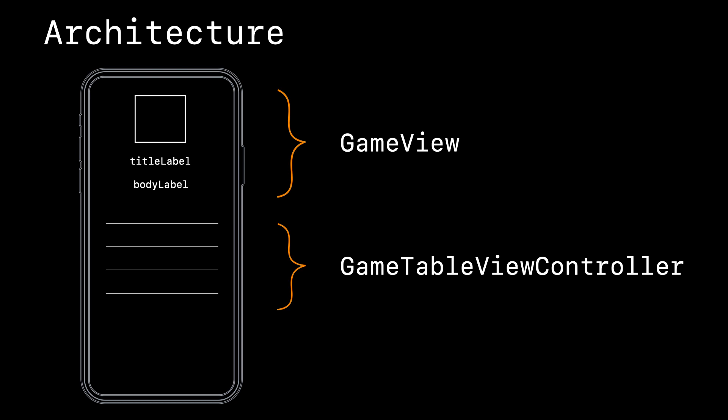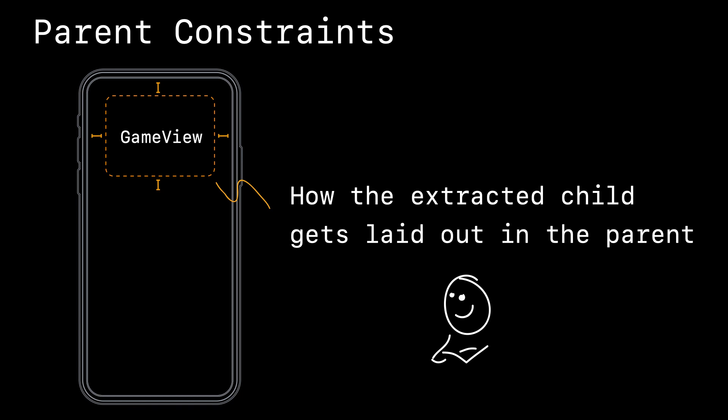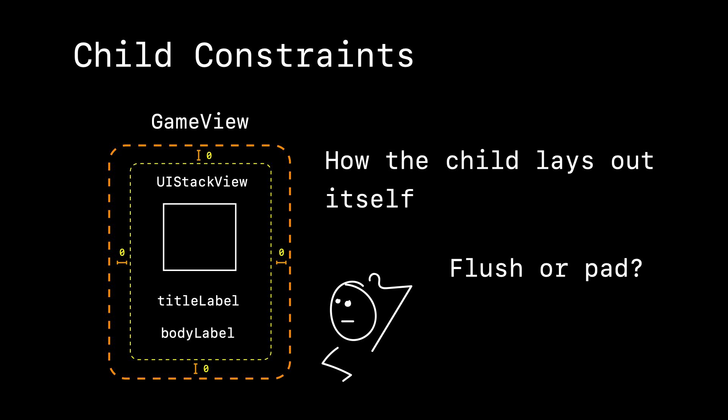We've got a game view to extract from the top and a game table view controller from the bottom. When extracting a view, you need to understand there are two sets of constraints: the parent set of constraints, and the child set — how you want to lay out the extracted view within itself. The parent constraints are simple because we've already built the app. But when extracting, you need to decide whether the sub-view should include its own padding or be flush to the edge.